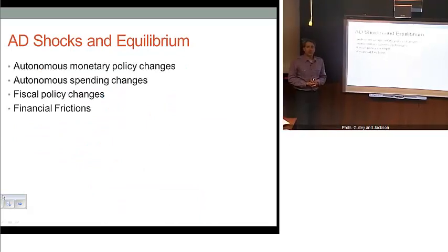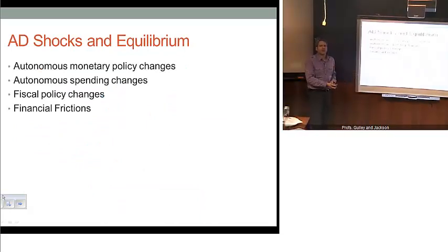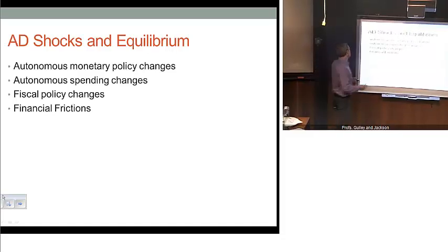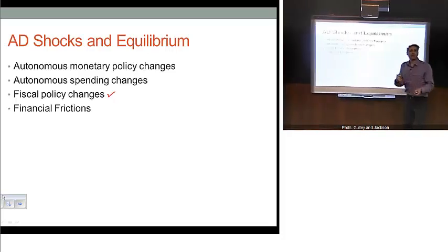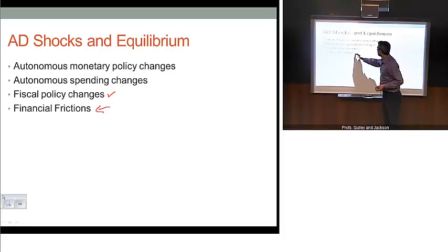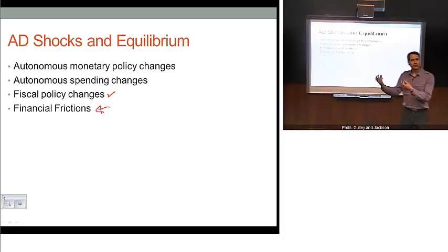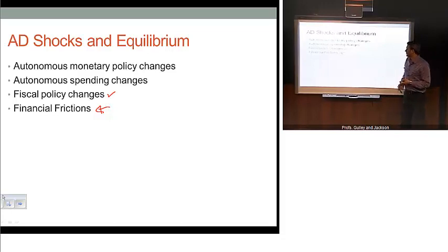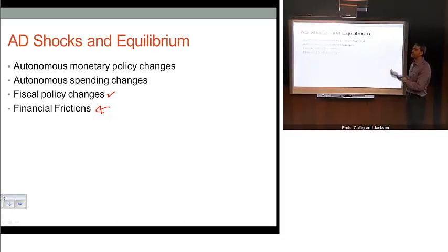Let's look at some changes to our equilibrium — how do we get those changes in our short-run equilibrium? Those are going to come through various shocks: changes in exogenous monetary policy (autonomous policy changes), autonomous changes in spending, changes in fiscal policy (tax and spending), and changes in financial conditions. As we saw in the financial crisis, tight credit raised the cost of borrowing substantially and increased credit spreads. All these things factor into different shocks that can occur and hence changes in this equilibrium.